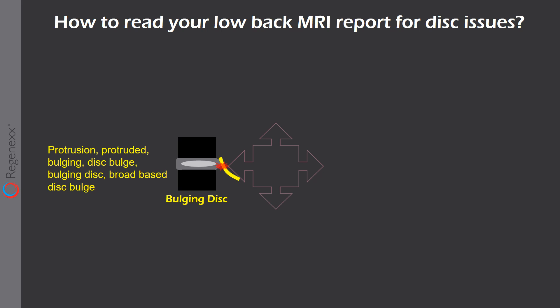There's a bulging disc, and if you have that, that's basically where the disc is pushed out, pressing on or irritating a nerve, which can lead to not only back pain but sciatica-type symptoms. The words to look for are: protrusion, protruded, bulging, disc bulge, bulging disc, or broad-based disc bulge.